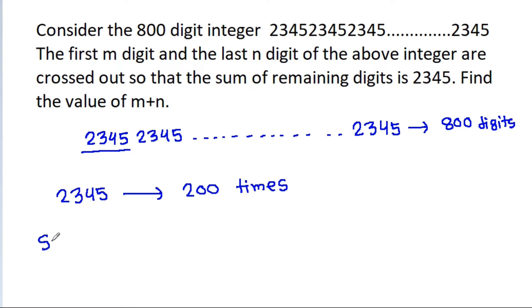So, sum of all digits will be 2 plus 3 plus 4 plus 5 times 200. And 2 plus 3 is 5 plus 4 is 9 plus 5 is 14. It is 14 times 200, that will be 2800.